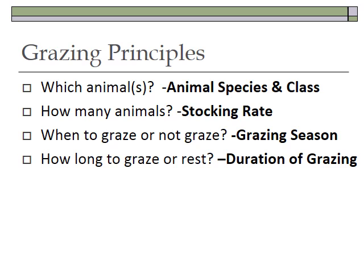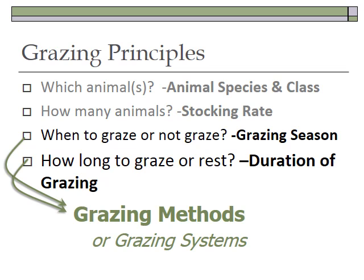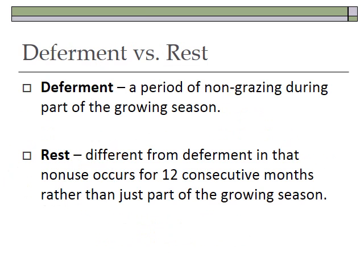Grazing principles are based on the fact that you can manipulate animal species, stocking rate, or how many animals, when animals graze — which is the grazing season — and then how long animals are grazed or rested, which is the duration of grazing. Those last two points — when to graze or not to graze, and how long to graze or rest — are the elements of a grazing method.